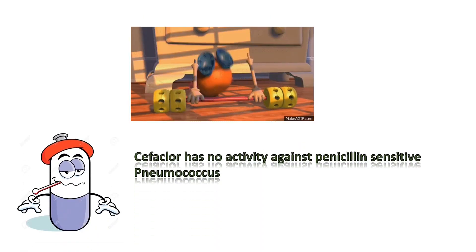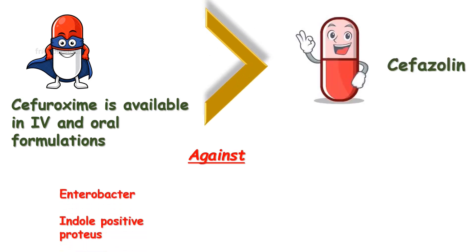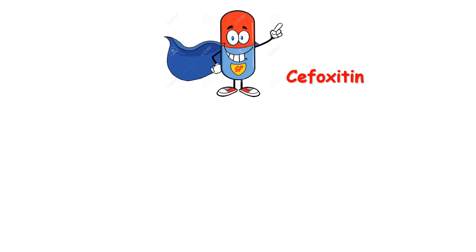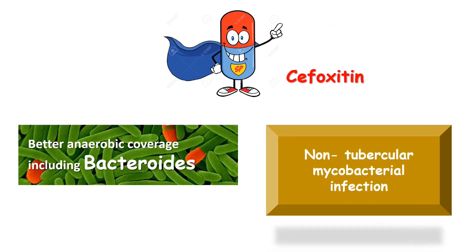Cefaclor, one second generation agent, has no activity against penicillin-sensitive pneumococcus. Cefuroxime, a true second generation cephalosporin, is available in both parenteral and oral formulations and is more active in vitro than first generation agents against Enterobacter and indole-positive Proteus. Cefoxitin, from the cephamycin group, demonstrates more anaerobic activity especially against Bacteroides fragilis, and also offers activity against rapidly growing non-tuberculous mycobacteria, often included in multi-drug regimens for serious NTM infections.